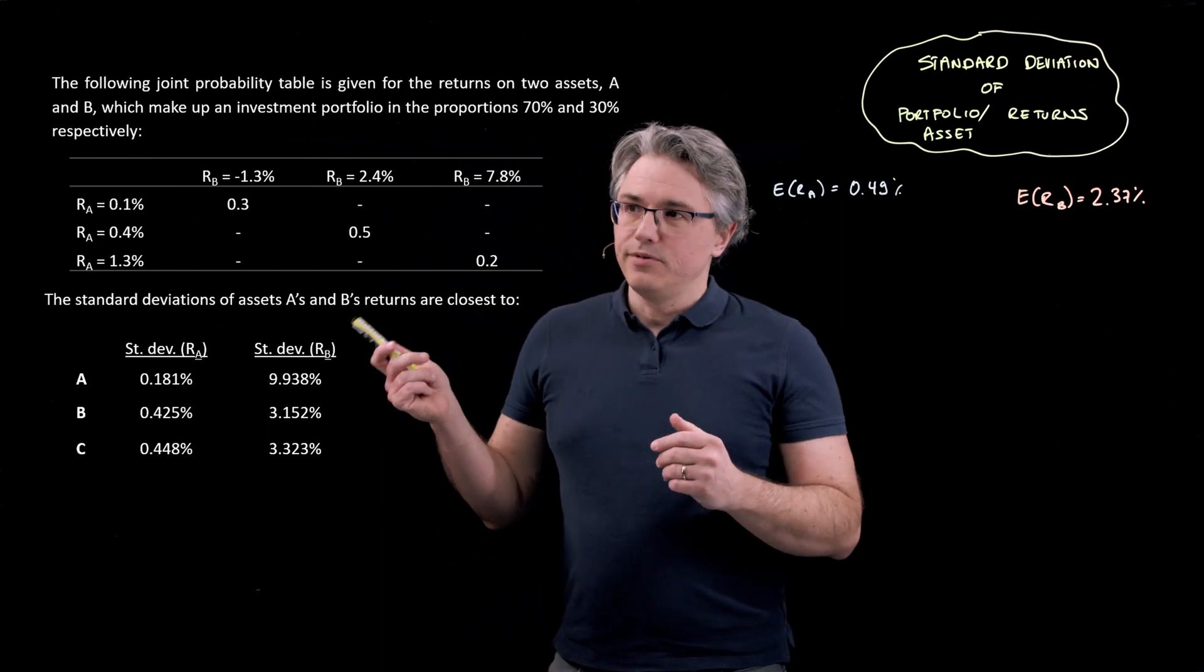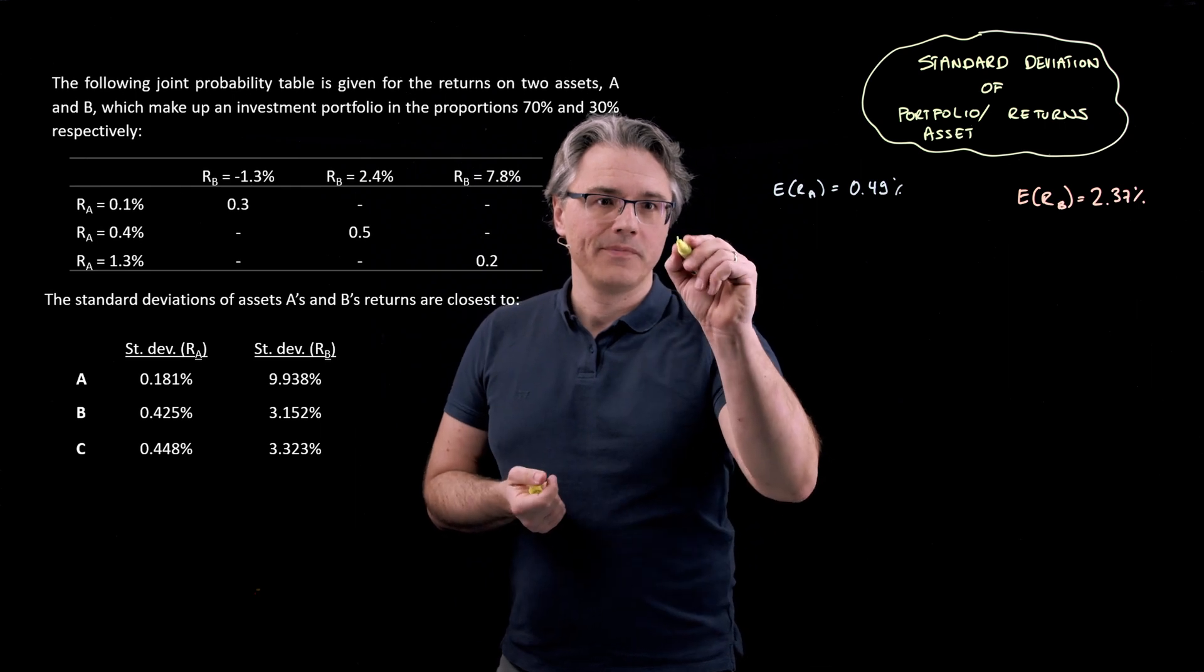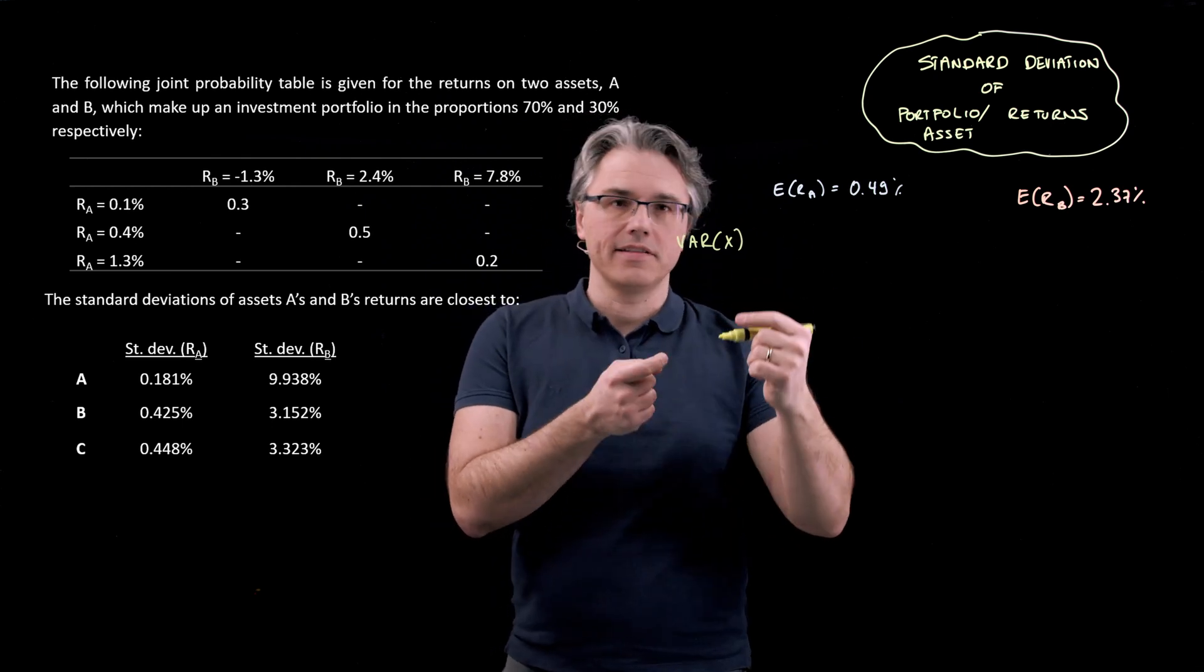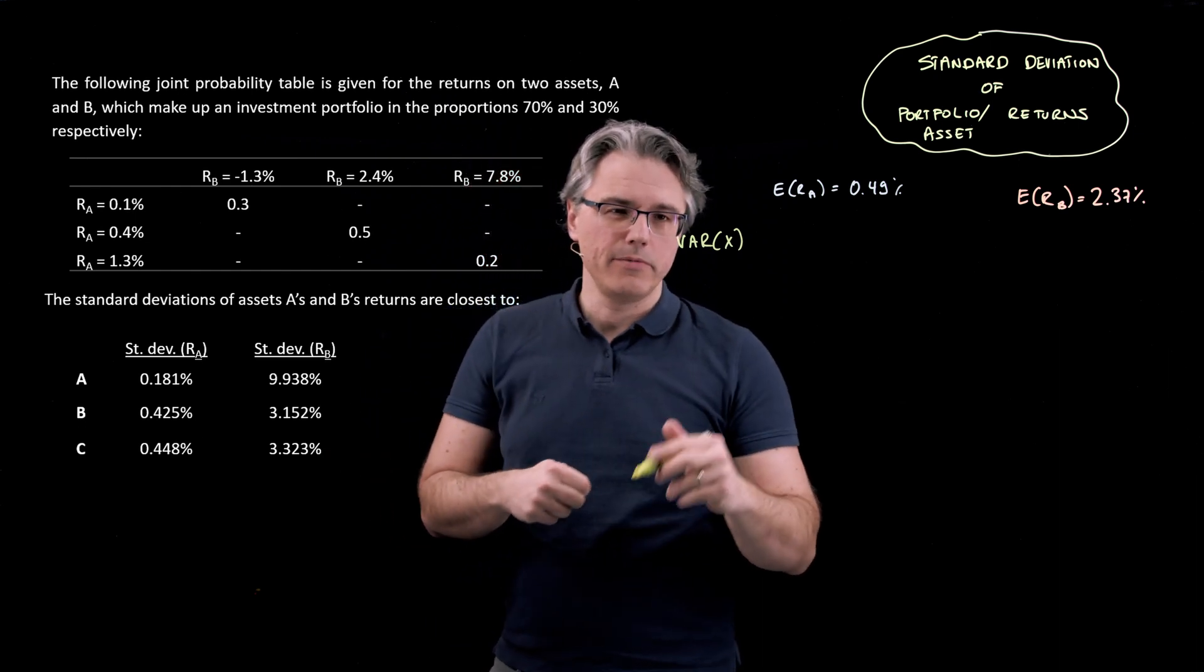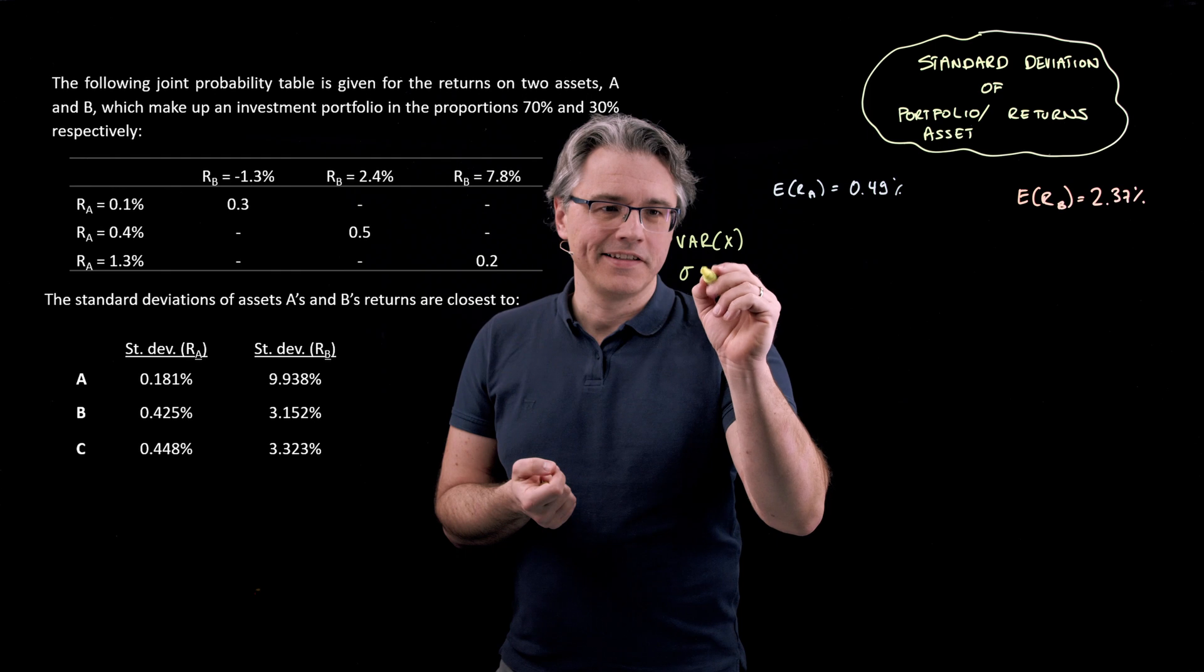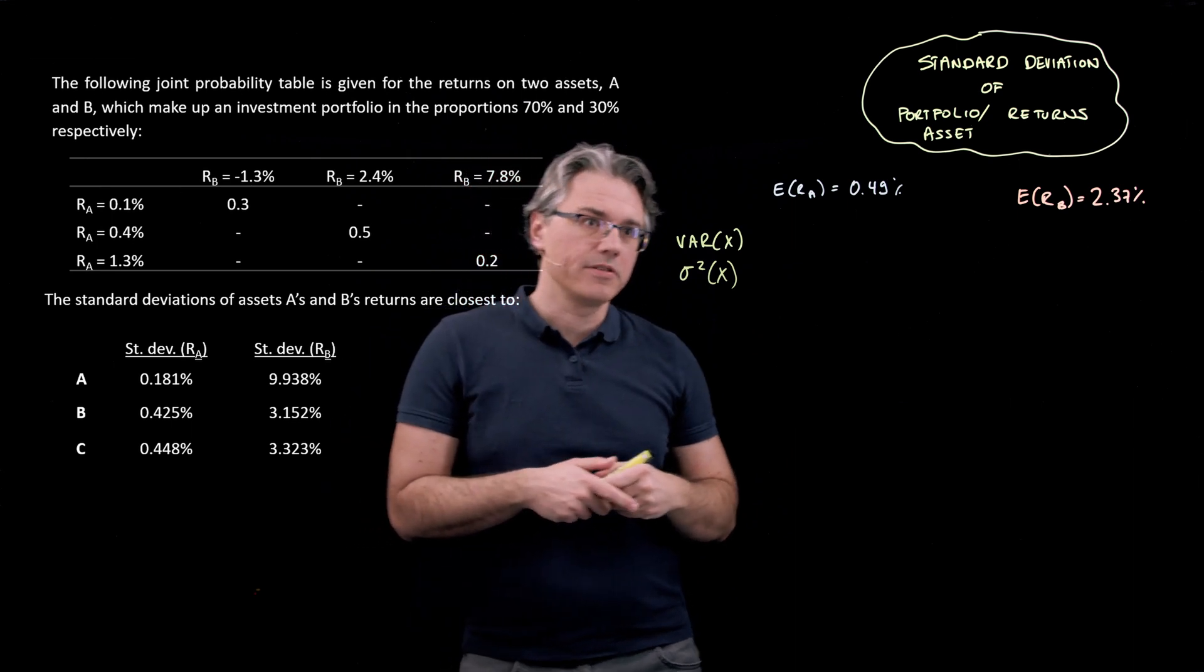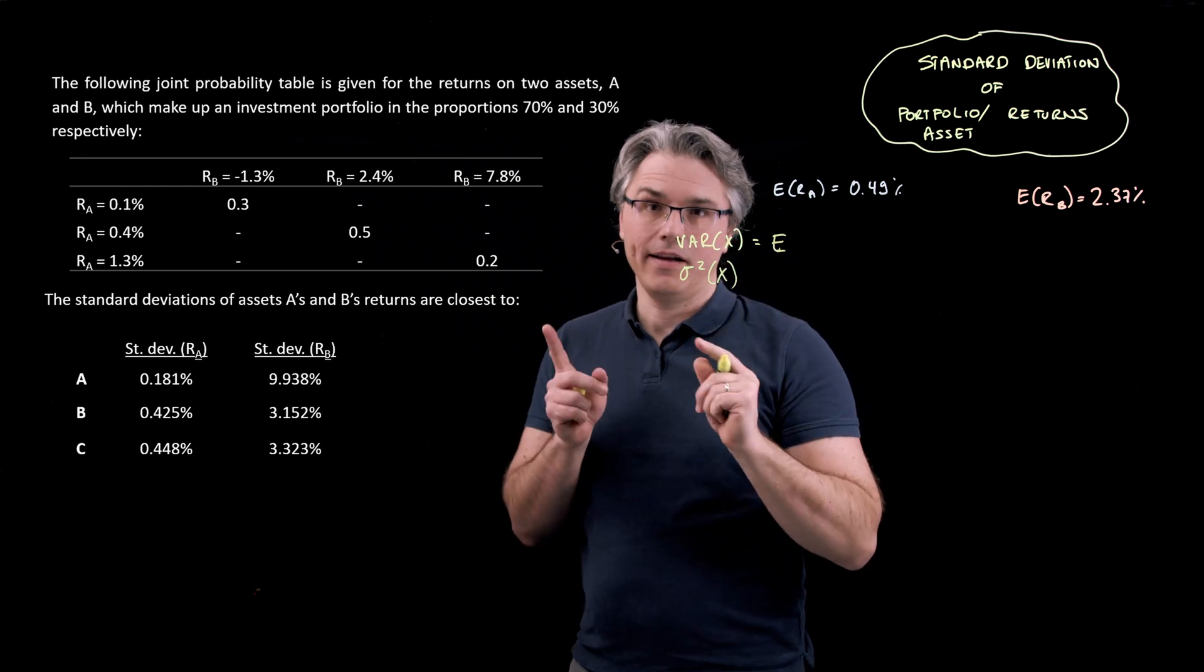In order to compute standard deviation, you've got to start with variance. And the formula that you're going to use for the variance of X, X being either in this case, the returns on A or returns on B. We're going to plug those in in just a moment. Or if you prefer to use the other notation, that's going to be sigma squared, where sigma is standard deviation and variance is sigma squared, is going to be given as the expected value.